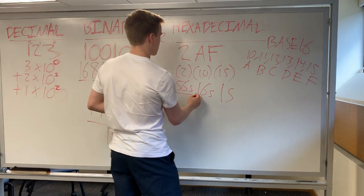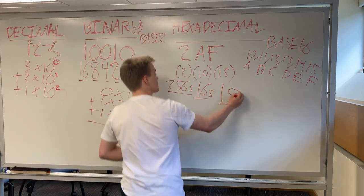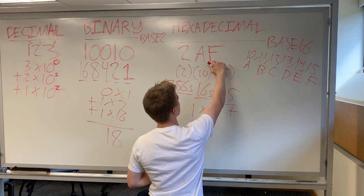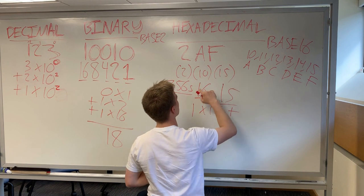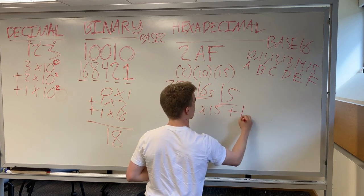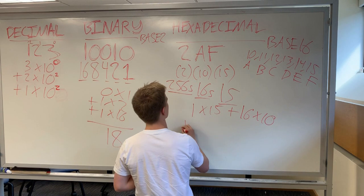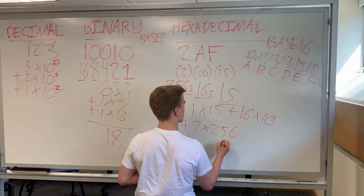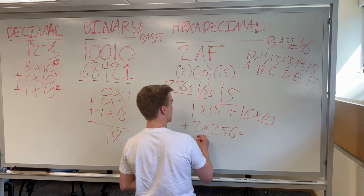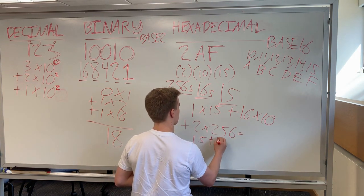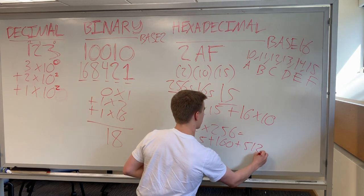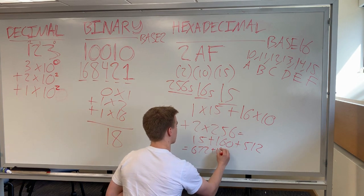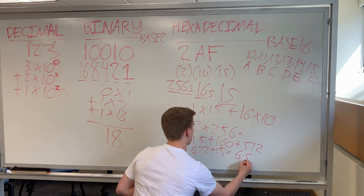So to calculate the value of this number, it would be 1 times 15, right, because there's a 15 in the 1's place, 16 times 10 plus 2 in the 256th place. So I think that equals, let's see, 15 plus 160 plus 512 equals, I've never been great at math, is 672 plus 15 is 687.